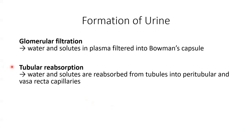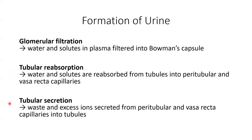Note that tubular reabsorption refers to the return of substances back to the bloodstream — this is different from the entry of new substances into the body, such as absorption that occurs in the gastrointestinal tract. Tubular secretion also occurs as filtered fluid goes through the renal tubules and collecting ducts, where cells secrete materials such as waste products, drugs, and excess ions into the filtered fluid, thereby removing them from the blood.